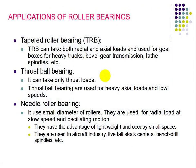Applications of roller bearings: ball bearings are mainly used where friction should be less. Tapered roller bearings can take both radial and axial loads, and are used for gearboxes in heavy trucks, bevel gear transmissions, and lathe spindles. Thrust ball bearings can take only thrust load and are used for heavy axial loads at low speeds. Needle bearings use small diameter rollers, are used for radial load and slow oscillating motion, have the advantage of high load capacity in a small space, and are used in aircraft industry, tailstock centers, bench drill spindles, etc.